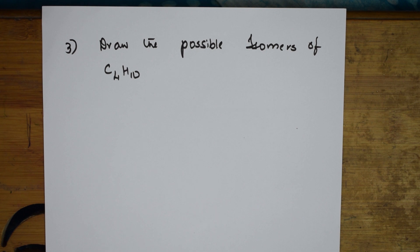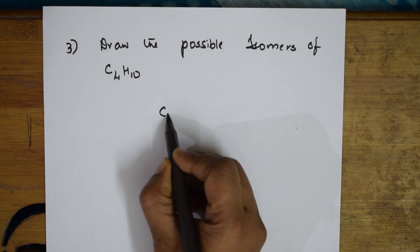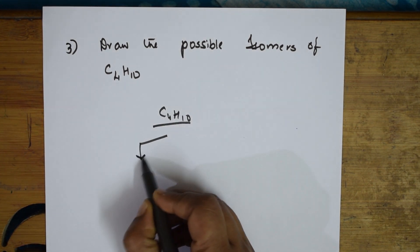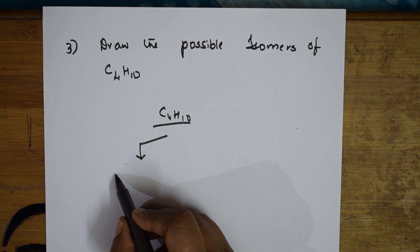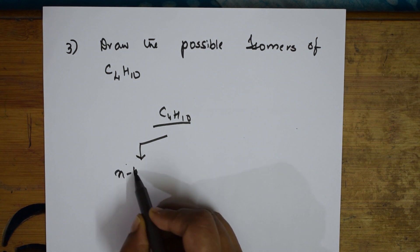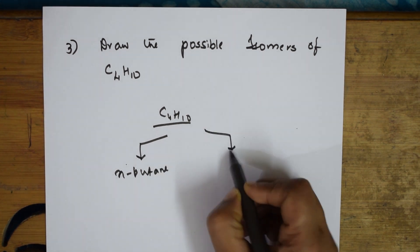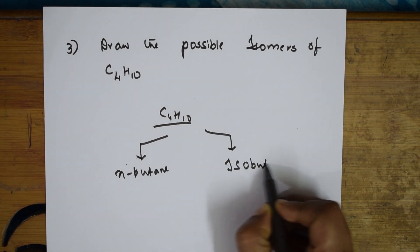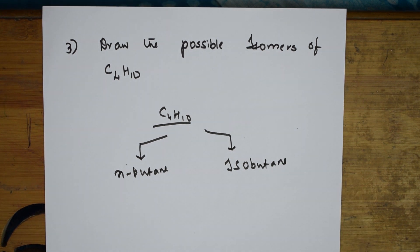When writing butane isomers, I'll give you a clue — please practice by yourself. C4H10 will have two chain isomers. One is n-butane — the straight chain — and the other is isobutane. Try it by yourself; it's easy. First make the straight chain for n-butane, then make isobutane, and your structures are done.